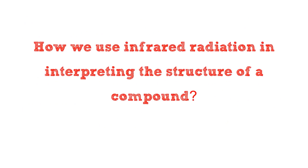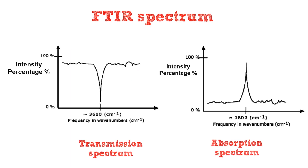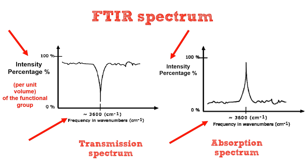How do we use infrared radiation in interpreting the structure of a compound? The FTIR spectrometer gives us either transmission or absorption spectra. The spectrum is plotted with absorption frequencies or transmission on the x-axis in reciprocal cm, against the percentage intensity of the peak on the y-axis. The percentage intensity indicates the amount per unit volume of the functional group associated with the molecular bond. Although IR doesn't give detailed information about molecular formula or detailed structural information, it can give us information about the functional groups within the molecule.